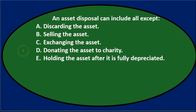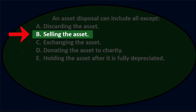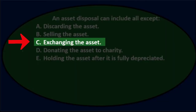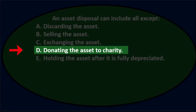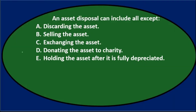Next question. An asset disposal can include all except: A. Discarding the asset. B. Selling the asset. C. Exchanging the asset. D. Donating the asset to charity. Or E. Holding the asset after it's fully depreciated.